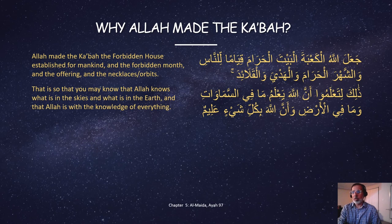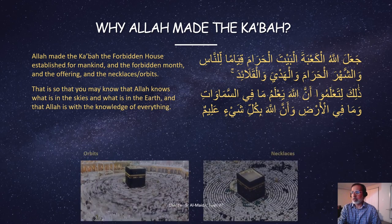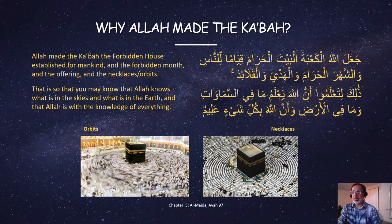What else did he make? The forbidden month and the offering, and the necklaces and orbits. Now we will focus on the necklaces and the orbits. In the left picture, pilgrims orbiting the Ka'bah, and in the right picture, people performing prayer, forming the necklaces.